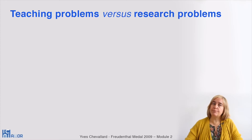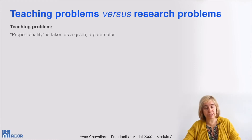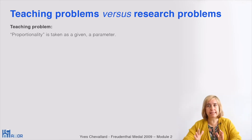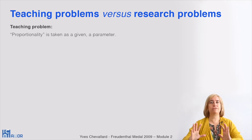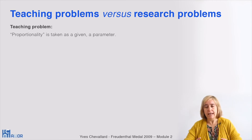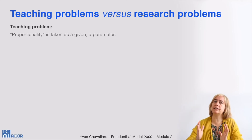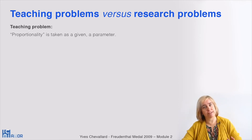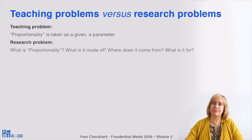When we consider a teaching problem like how to teach proportionality, we assume that we know what proportionality is. We also assume that even if there are many different ways to teach and learn proportionality, all of them deal with the same piece of knowledge, even if the methodology and results might vary a lot. The piece of knowledge is taken as a given — using a mathematical metaphor, proportionality is considered more like a parameter than an unknown. Only teaching and learning are the unknowns to determine.